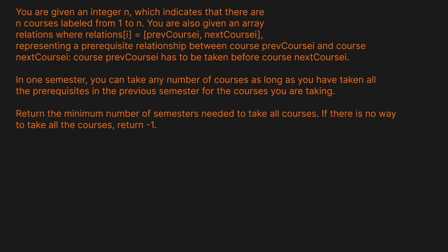Let's read the question prompt. You are given an integer n, which indicates that there are n courses labeled from 0 to n. You are given an array which represents the relations, where relations[i] represents the previous course and the next course — a prerequisite relationship where the previous course has to be taken before the next course. In one semester, you can take any number of courses as long as you have taken all the prerequisites in the previous semester. Return the minimum number of semesters needed to take all courses. If there's no way to take all the courses, return minus one.